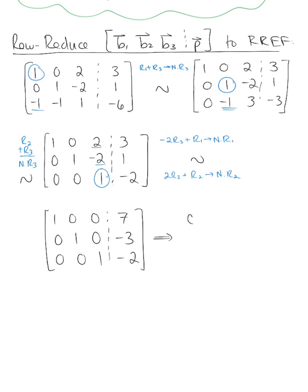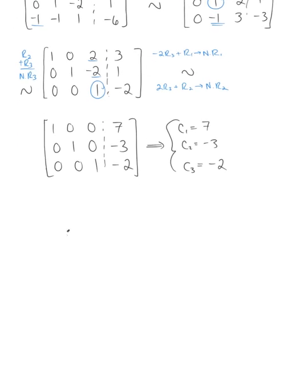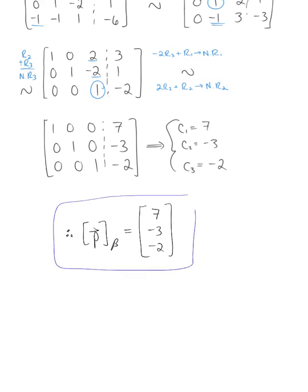From the reduced matrix, we read off c₁ = 7, c₂ = -3, and c₃ = -2. Therefore, the coordinates of vector p relative to basis b is the column vector [7, -3, -2]. This is our final answer.